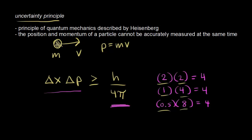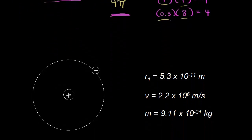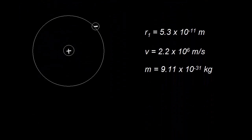Let's apply the uncertainty principle to the Bohr model of the hydrogen atom. In the Bohr model, the negatively charged electron orbits the nucleus like a planet around the sun, and there's a velocity associated with that electron going in a particular direction.